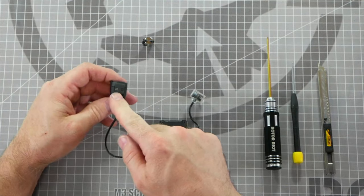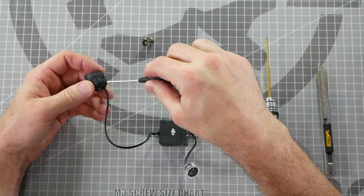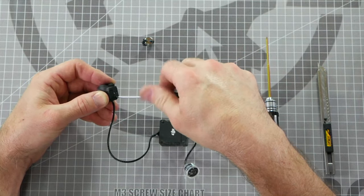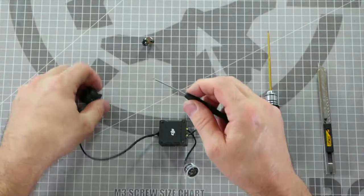After removing the four M2 screws, we're going to remove the two Phillips heads out of the side of the camera, one on each side, and place them on the magnet so they don't get lost.